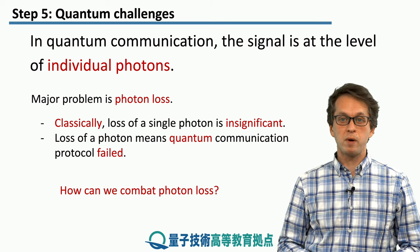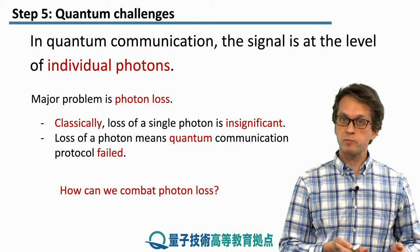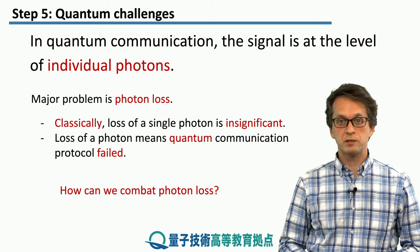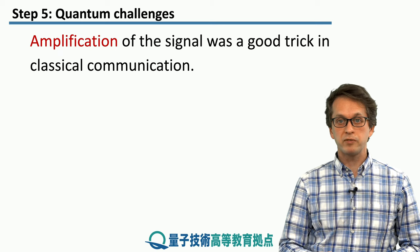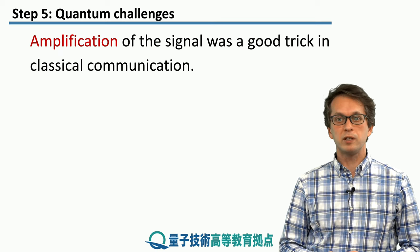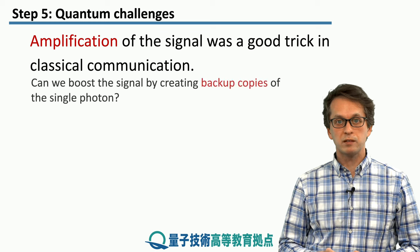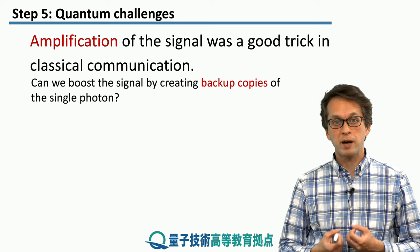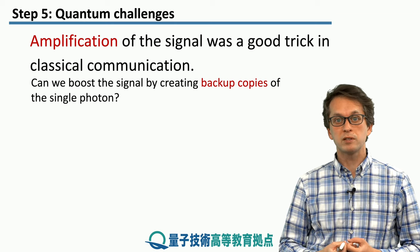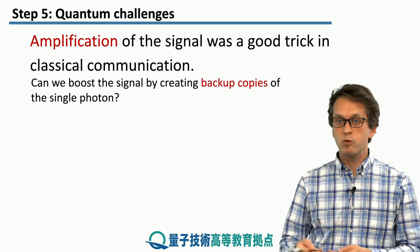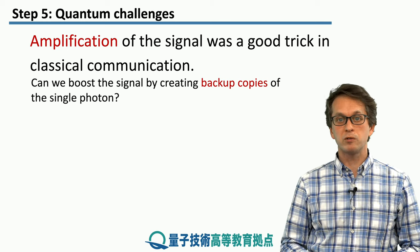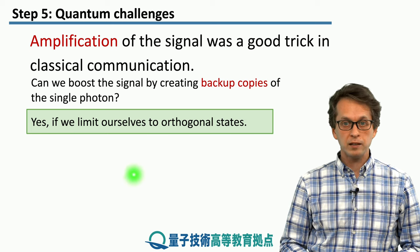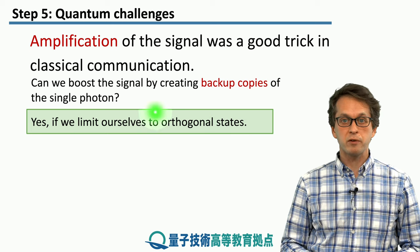So how can we combat photon loss? We saw that it's possible classically — let's think whether this is also possible in quantum communication. Amplification of a signal worked in classical communication. Can we do that for quantum signals as well? Can we create backup copies of the single photons such that if one gets lost, we can still use the backups to proceed with the protocol? We can, but we are limiting ourselves to orthogonal states.